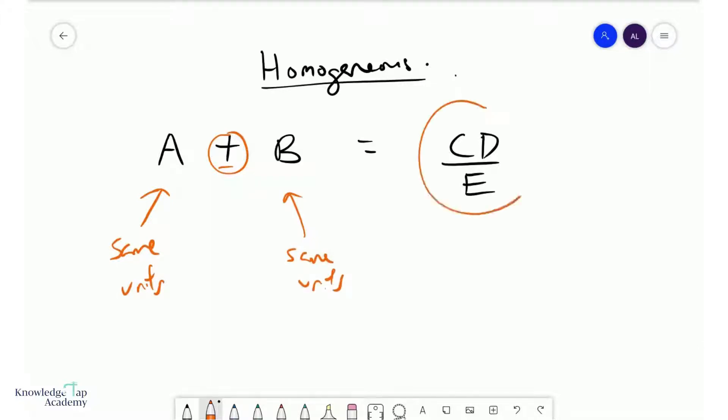And not only that, the stuff that they're equal to must also have the same units. And it's quite commonsensical, right? For example, if this was in kilograms, you would expect to add or subtract other stuff which are also measured in kilograms.